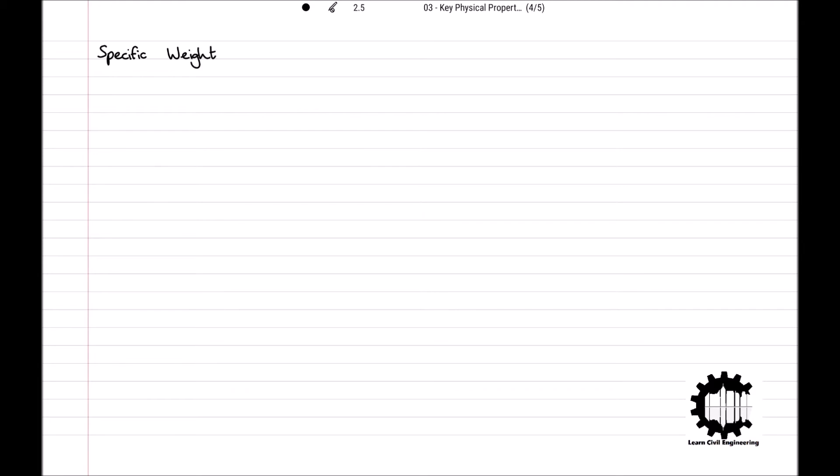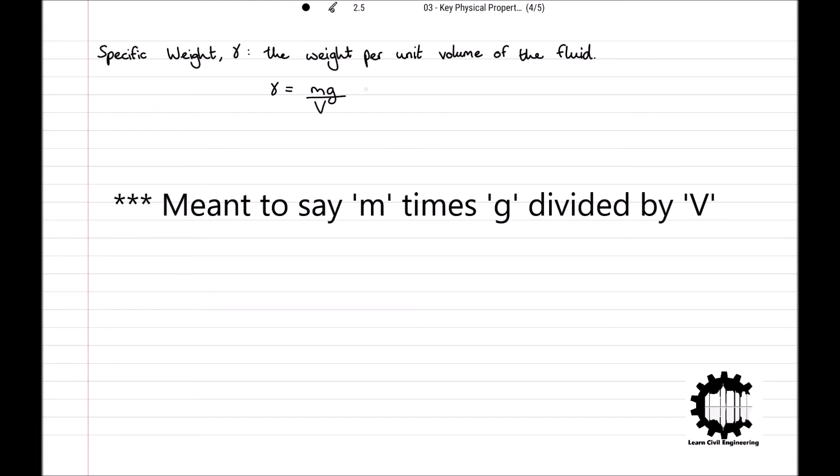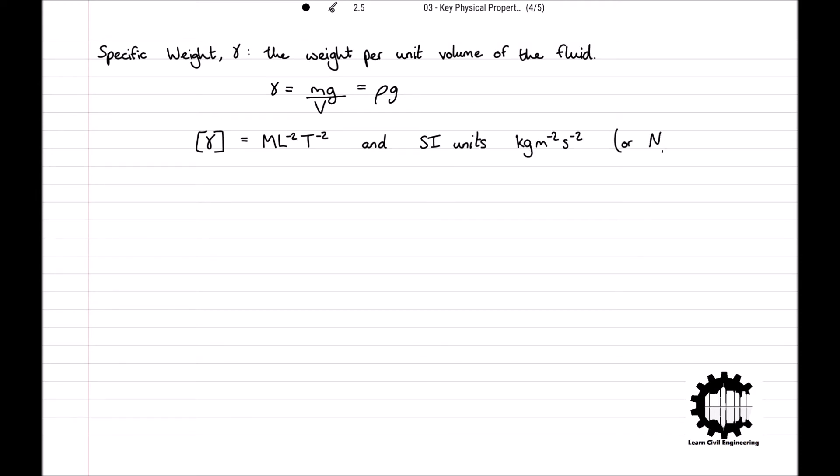It is also common to use the specific weight, defined as the weight per unit volume of the fluid. We denote specific weight by γ. If a mass m of fluid occupies volume V, its specific weight is defined as γ = mg/V, which is also the same as saying ρg. Specific weight has dimensions of ML^-2T^-2 and SI units kg/m²/s² or N/m³.